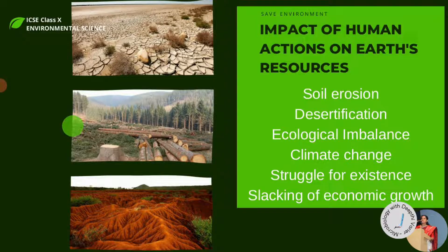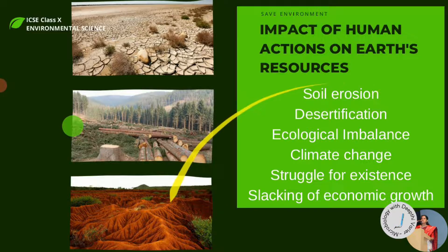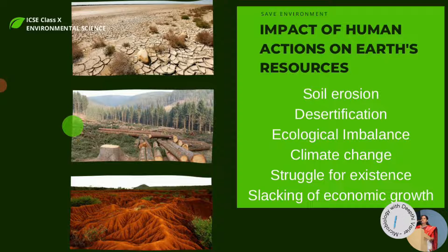The first harm caused by human actions is soil erosion. Soil erosion happens because we cut down trees — deforestation. When trees are cut down, there are no roots left to hold the soil, so whenever there is strong wind or rain, soil erosion occurs. When soil erosion continues for a long period, there is no more fertile land, and that fertile land gets converted into wasteland, which is what we call desertification. Desertification is the conversion of fertile land into barren land due to overgrazing, deforestation, and global warming.